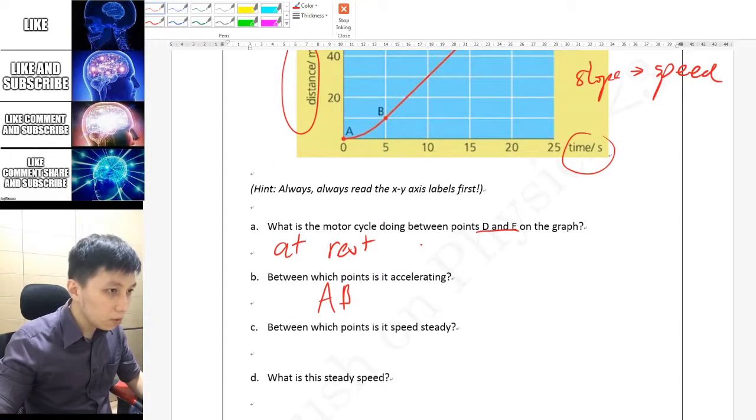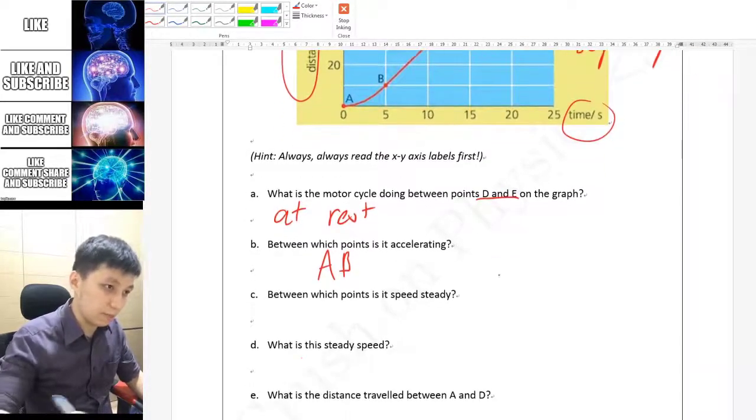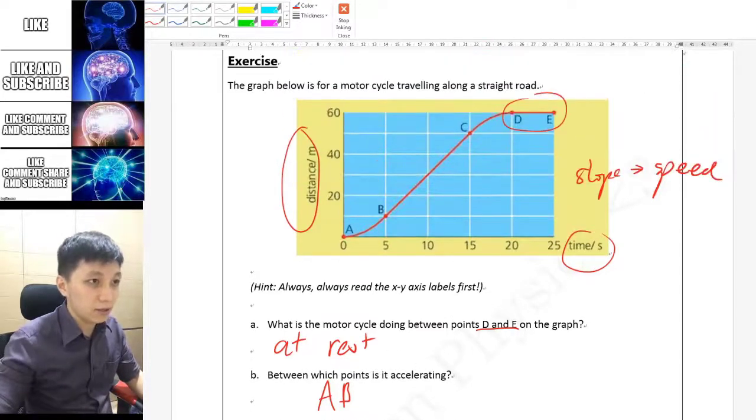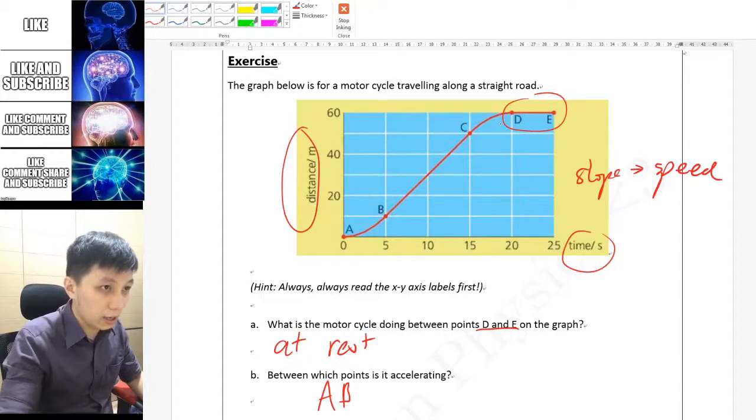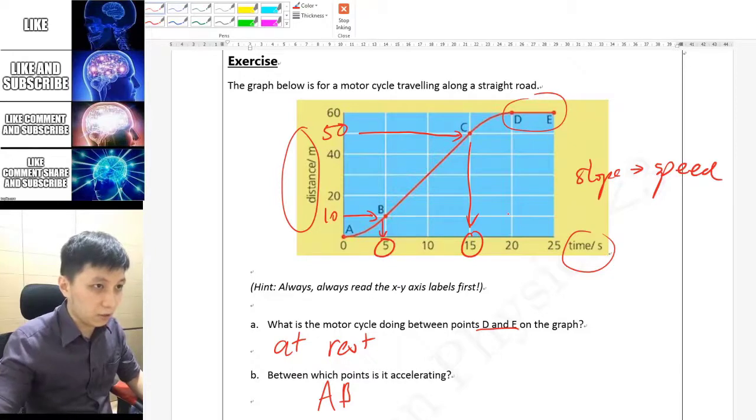For the point where it is maintaining the speed to be steady, that means B and C. What is that steady speed? Then you have to do calculation. How you can do is look at its coordinates. This is 50 with 15, and B will be 10, I believe, with 5.